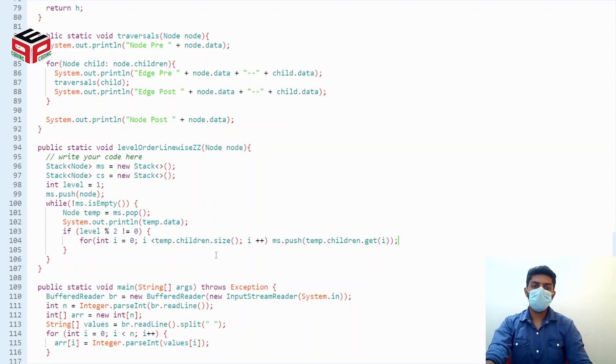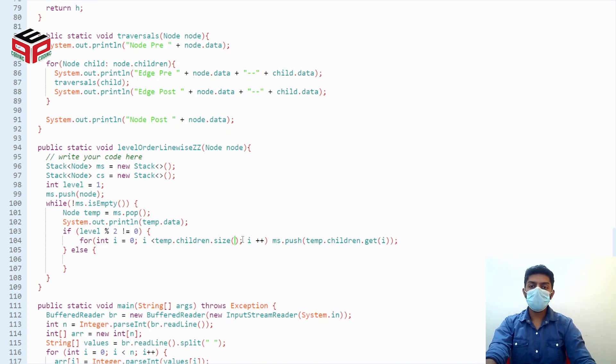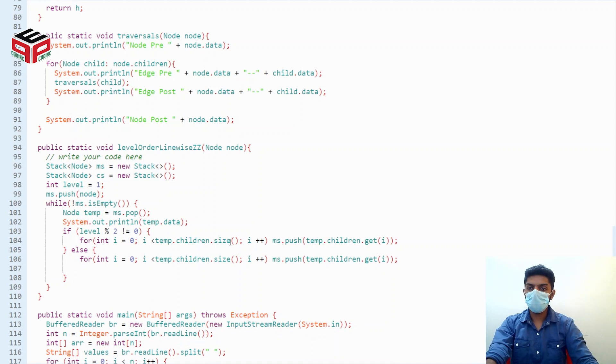And else we fill in the reverse fashion. So i equals to temp.children.size minus one, i is greater than or equal to zero, and i minus minus. And we'll be pushing in child stack instead of main stack. So it should be cs.